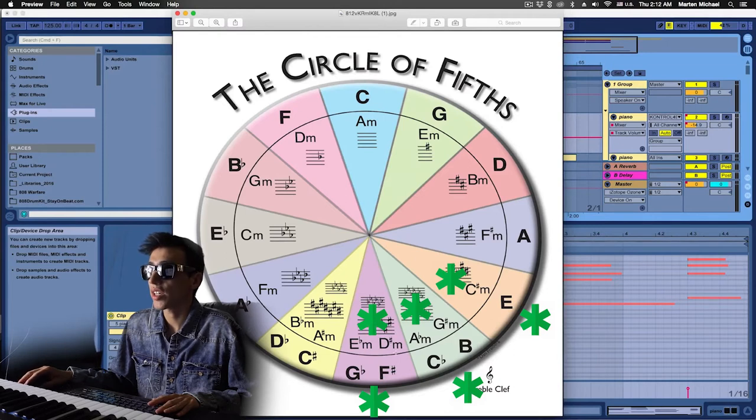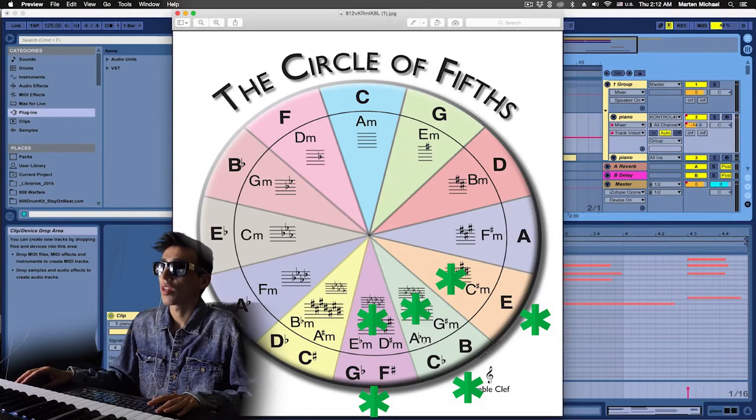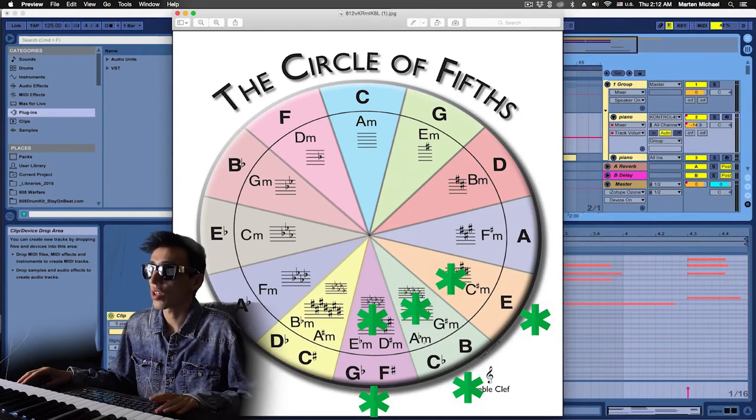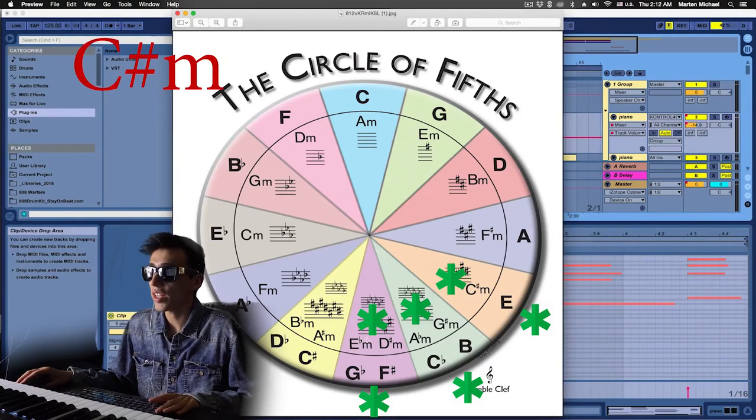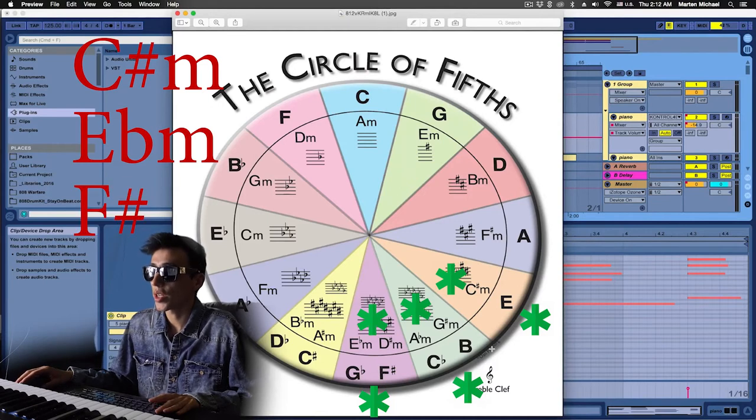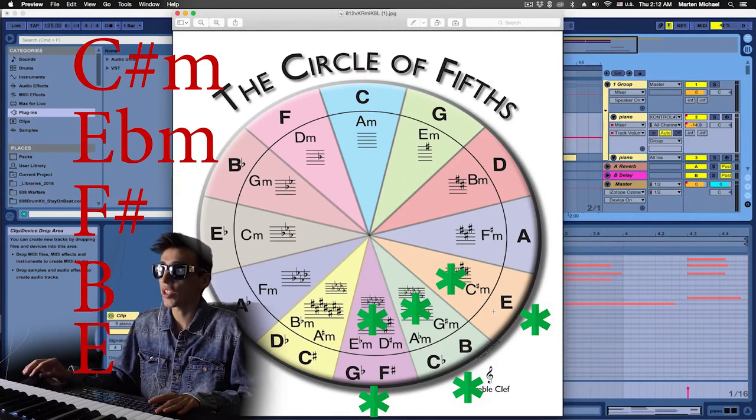Just by looking at this diagram, we know that in the key of Ab minor, the chords that are going to work are C sharp minor, Eb minor, F sharp major, B major, and E major.